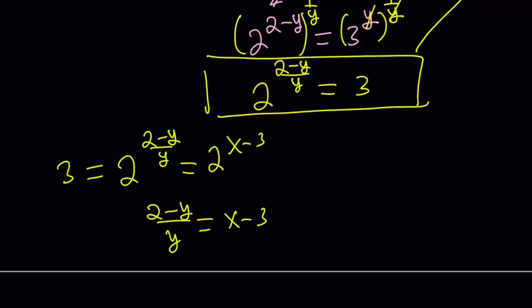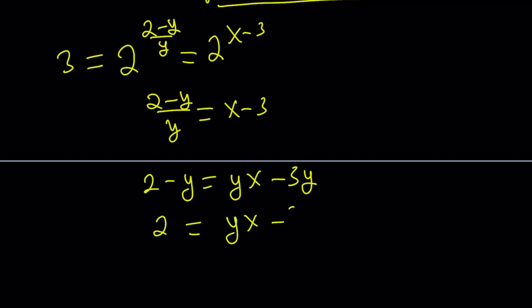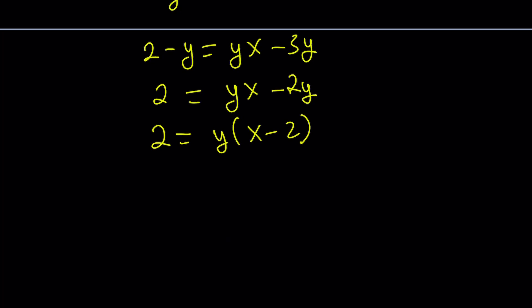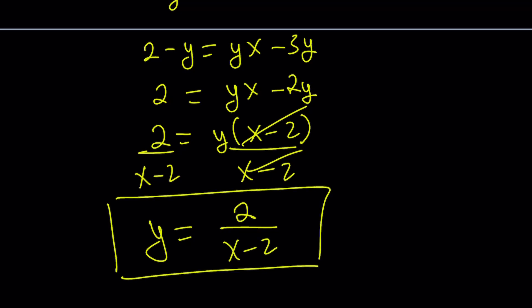We now have two different expressions for 3, so we can set them equal: 2 to the power (2 minus y)/y equals 2 to the power x minus 3. Setting the exponents equal and using cross-multiplication: 2 minus y equals yx minus 3y. Adding y to both sides gives yx minus 2y equals 2. Factoring out y and dividing both sides by x minus 2, we get y equals 2 over x minus 2. That is the end of the first method.